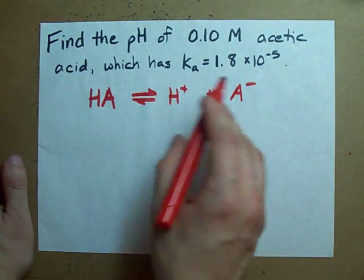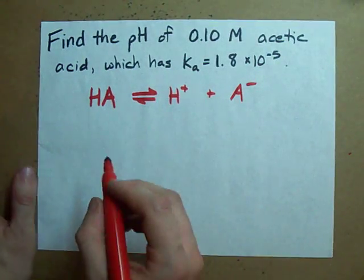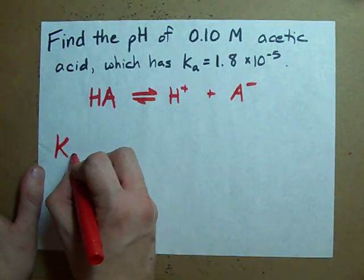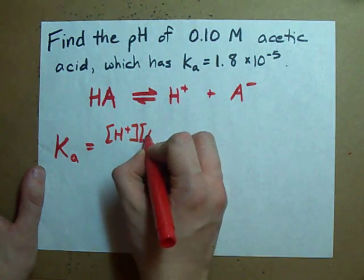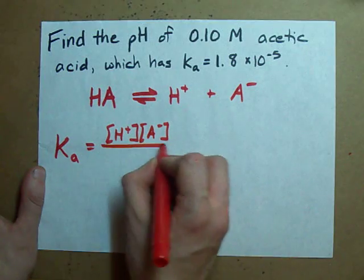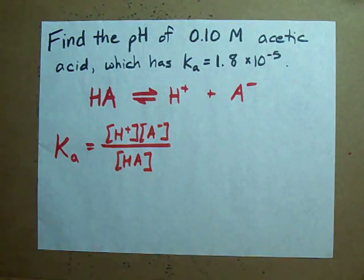Come up with Ka for this, or the equilibrium expression for the acid giving up its proton. The equilibrium expression is the concentration of each of the products over the concentration of each of the reactants. Piece of cake, son!